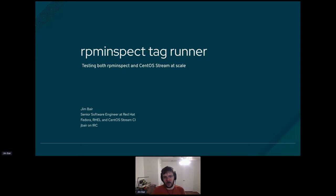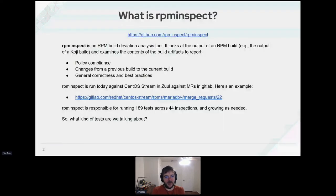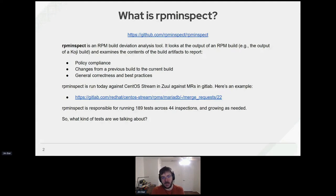Let's go ahead and hop into it — RPM Inspect Tag Runner. It's three words: what's RPM Inspect, what's a tag, and what's the runner? RPM Inspect is an open-source project on GitHub. To steal the definition directly from the project, it's a build deviation analysis tool. As the name would imply, it inspects the RPMs. You take the output of a build and examine it for things such as policy compliance, changes between builds, or what the business considers to be best practices.